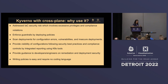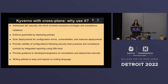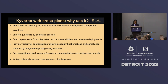When Kyverno blocks a request, it throws a message to the developer providing proper guidance. As a developer, if I deploy a YAML that is blocked, I get a message explaining what I'm supposed to do, so I know what to fix in my YAML. It provides guidance to developers and engineers on remediation and deployment security. Writing policy is easy — it's a simple YAML file. If you know Kubernetes, you can start deploying and writing your own policies from day one with no coding dependency.